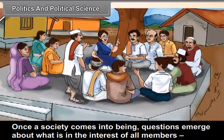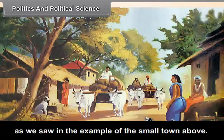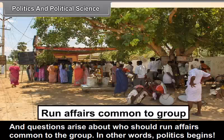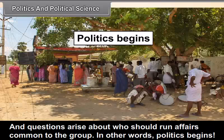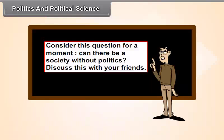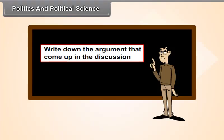Once a society comes into being, questions emerge about what is in the interest of all members. Questions also arise about who should decide what everyone's interest is, and who should run affairs common to the group. In other words, politics begins. Can there be a society without politics? Discuss this with your friends and write down your arguments.